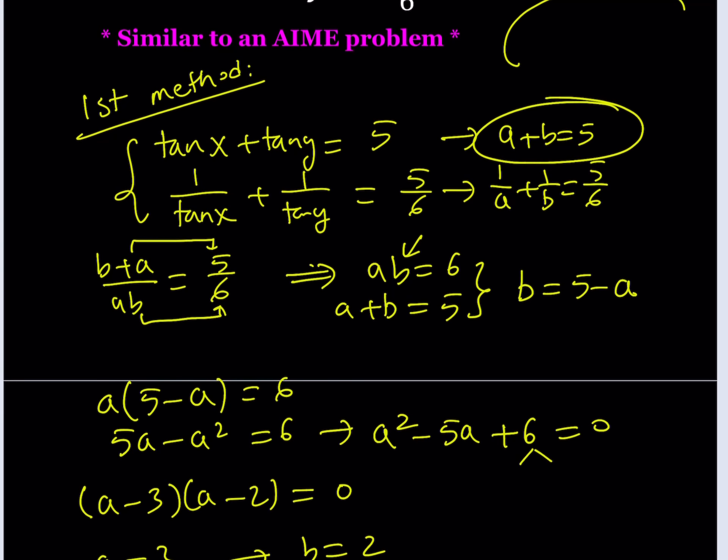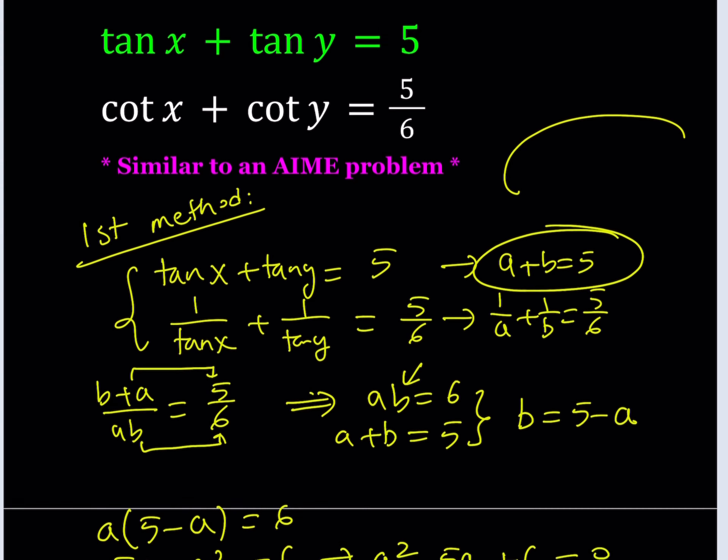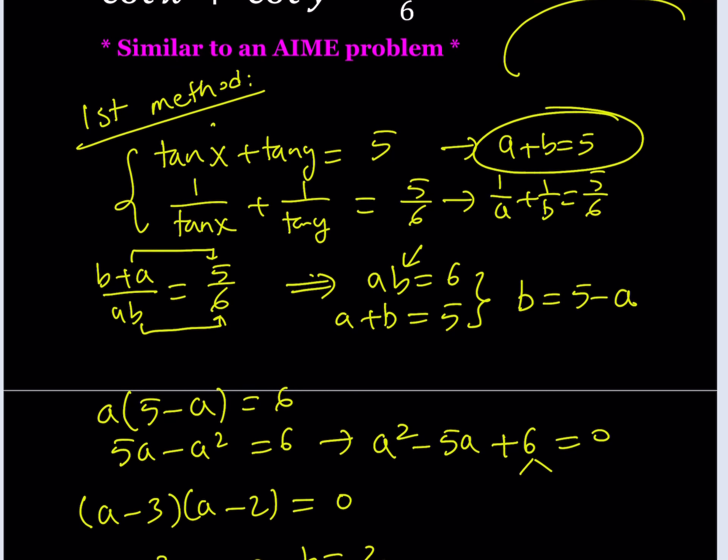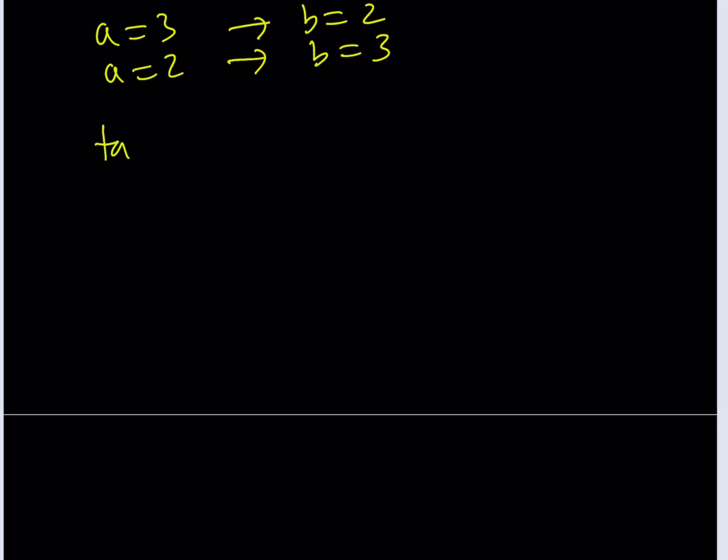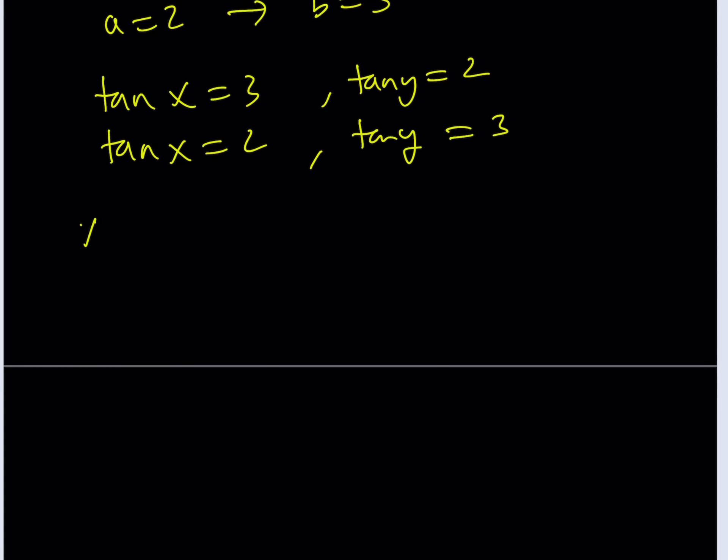From here, even though we're just getting the a values, the b values depend on the a values and a and b are kind of interchangeable. So we get a equals 3, which implies b equals 2, or a equals 2 and that means b equals 3. Now let's back substitute. We said that tangent x equals a, that's what we called a and b. This means that tangent x equals 3 and tangent y equals 2, or vice versa, tangent x equals 2 and tangent y equals 3.